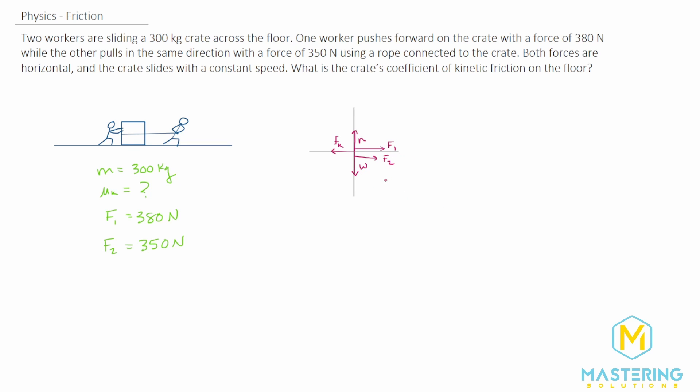Now we have our free body diagram. Let's sum the forces in the x direction. Force one plus force two minus the kinetic friction equals zero because it's moving at a constant speed, so the crate is in kinetic equilibrium.